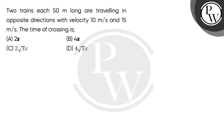Let's read the question. Two trains each 50 meter long are traveling in opposite directions with velocities 10 meter per second and 15 meter per second. The time of crossing is?